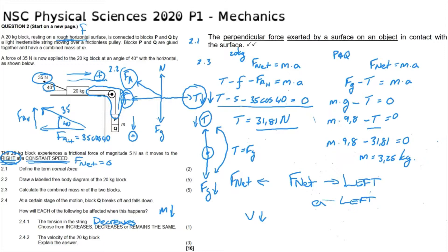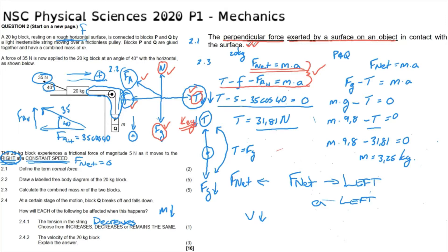Regarding marking: any definition is marked according to specific words or phrases expected to be present. It is important to consult the guideline document and quote definitions as verbatim as possible. A free body diagram typically awards one mark per force, with negative marking if a force is incorrectly added. Every force must be labeled, and it is good practice to include a key. For question 2.3, a two-body system always requires the formula f net equals ma, which must be stated.